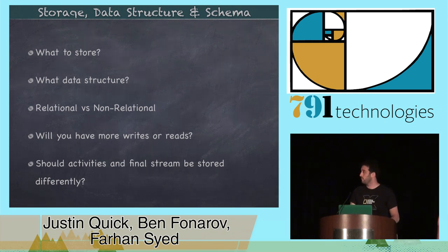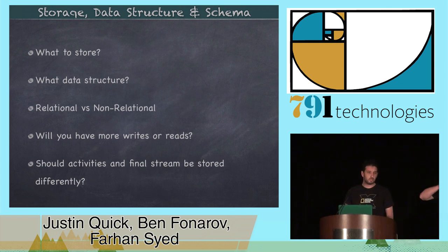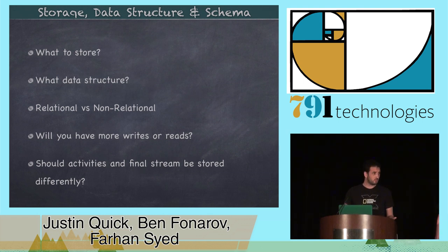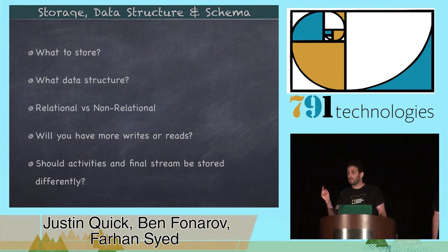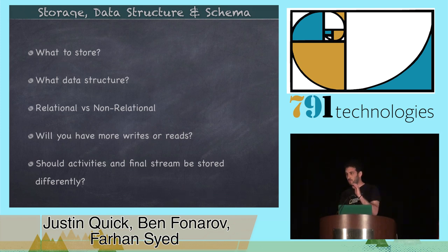The second problem is: what do we actually store, what type of data structure, and in what schema? Is this going to be a relational database or a non-relational database? Are we doing an adjacency list, an adjacency matrix, a doubly linked list, a key-value store, just a hash? Are you going to have more writes or reads? If you're a social media company, you might show the news feed a lot and have a lot of reads. If you're a company like National Geographic, there's mostly content — you're not going to show the news feed that much and you'll have a lot more writes. And do you store the activities in the same place as the actual stream, or is it pre-computed?